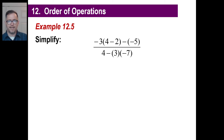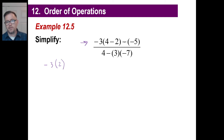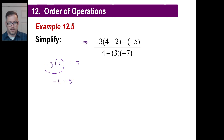Look at this one — bunch of minus signs. Pause and copy. Let's do the numerator first. Negative 3, and 4 minus 2 is 2. The opposite of negative 5 is 5. Negative 3 times 2 is negative 6. Negative 6 plus 5 is negative 1. There is your numerator.